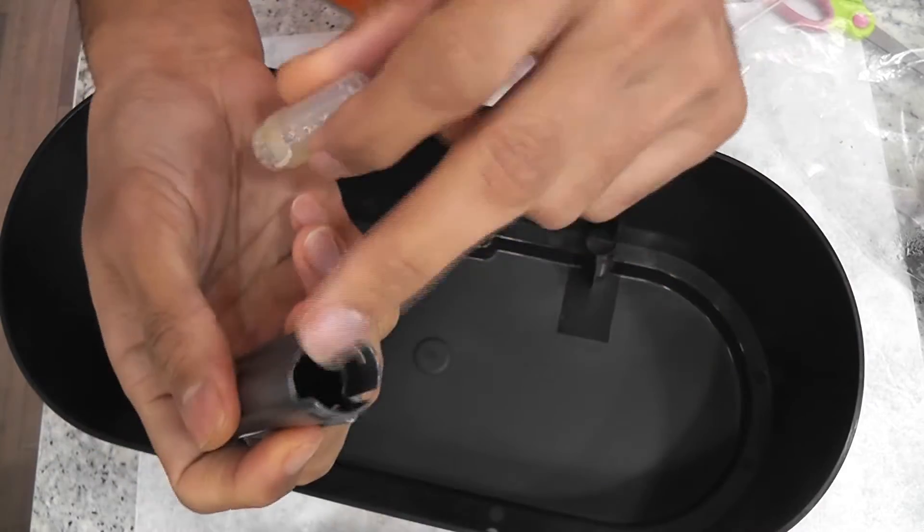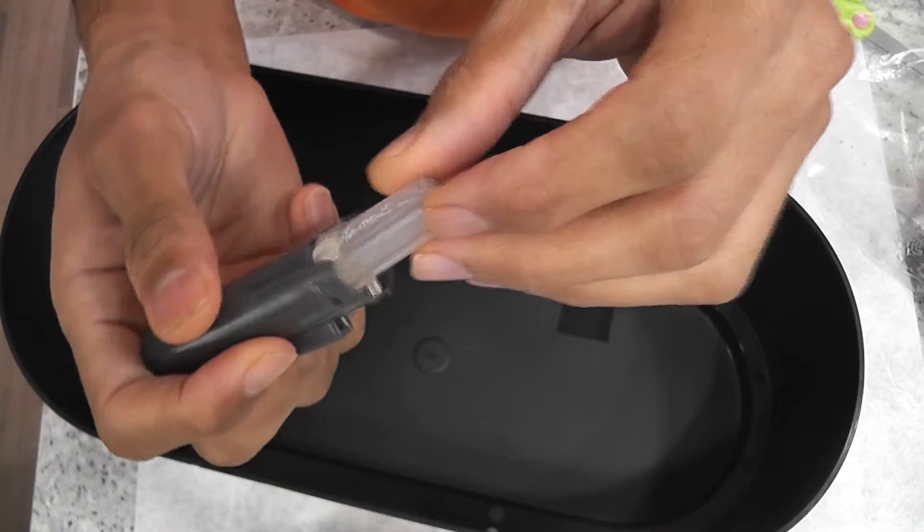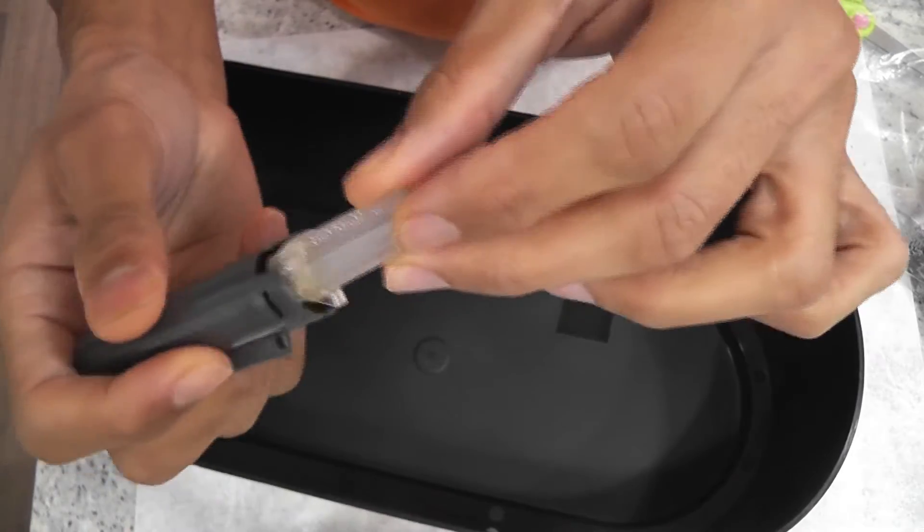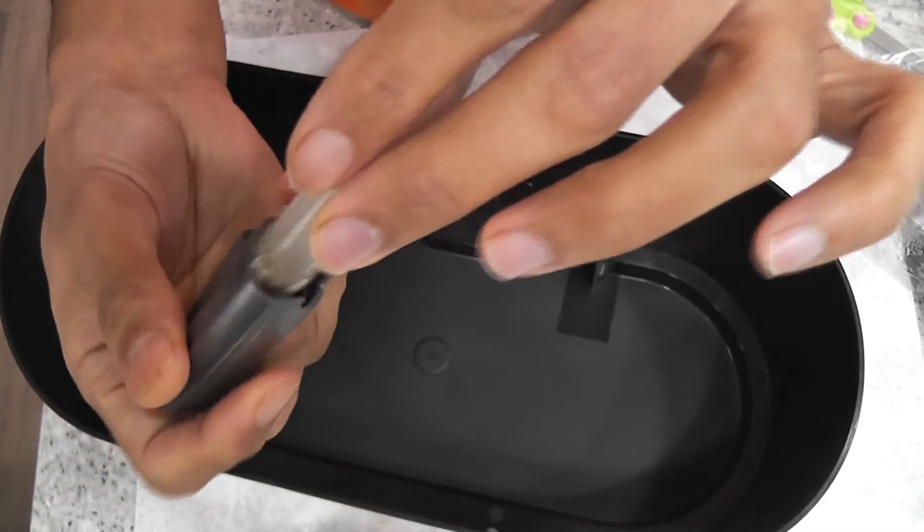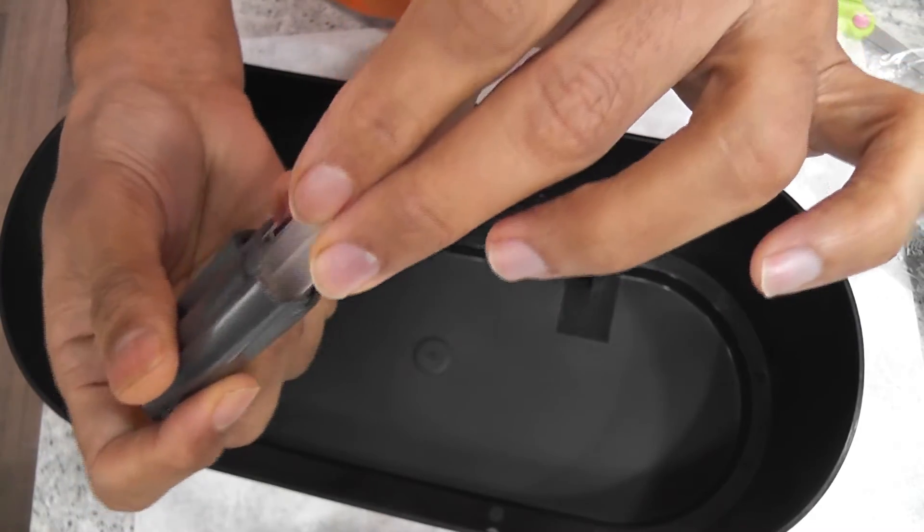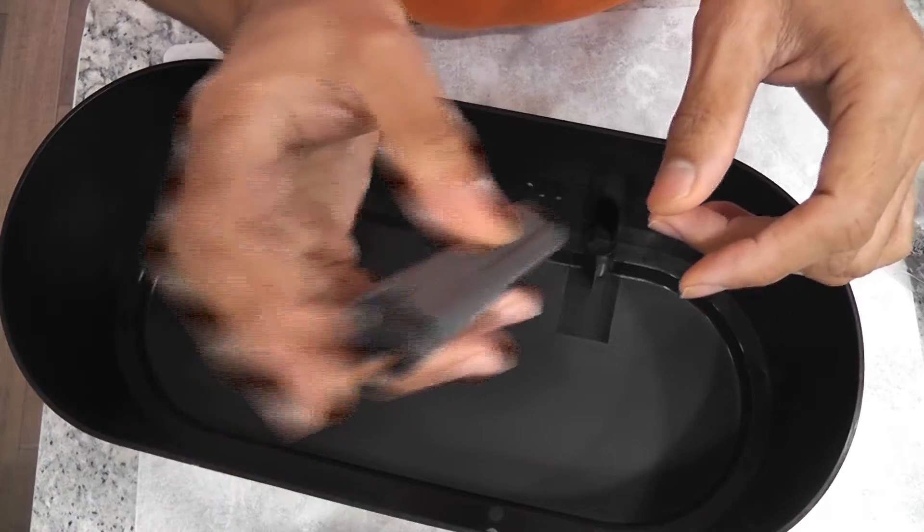Even when we try to insert the sensor in the right direction, it has to be aligned very well. So keep trying to insert while rotating slightly in any direction. Once it aligns well, the sensor will go inside easily.